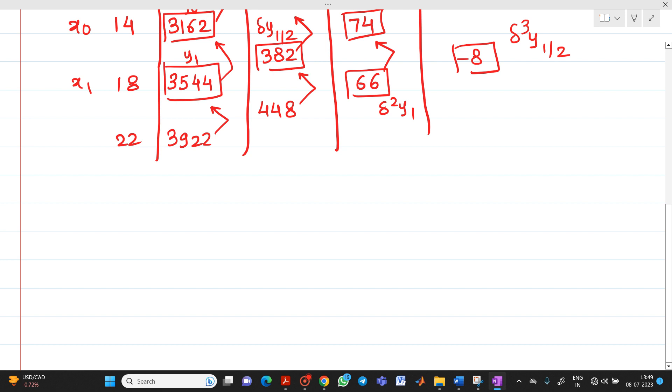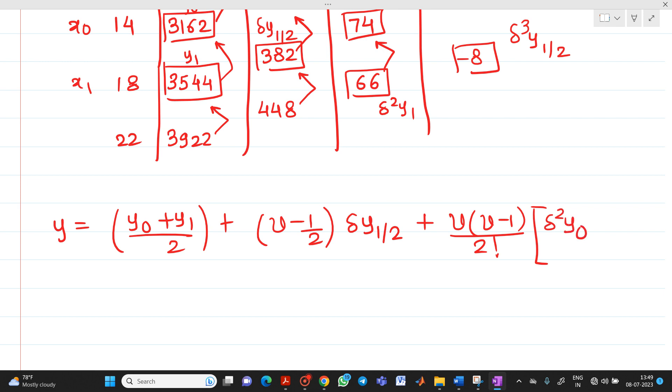So let me write here formula. What is the formula of Bessel's: y equals (y0 plus y1) divided by 2, plus (v minus 1/2) into del y of 1/2, plus v into (v minus 1) by 2 times (del square y0 plus del square y1) divided by 2, plus (v into (v minus 1)/2 times (v minus 1/2)) upon 3 factorial into del cube y 1/2.